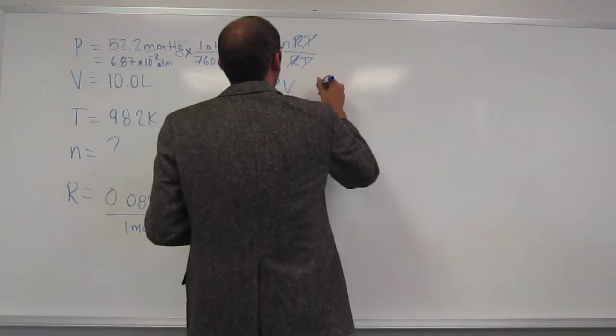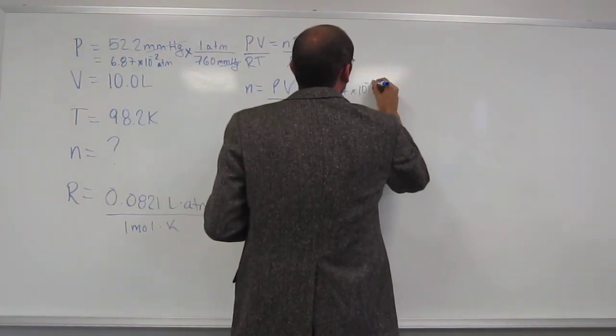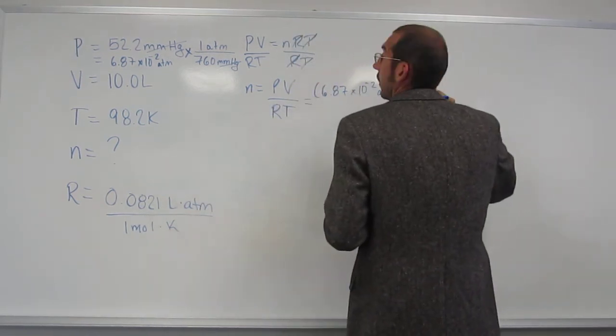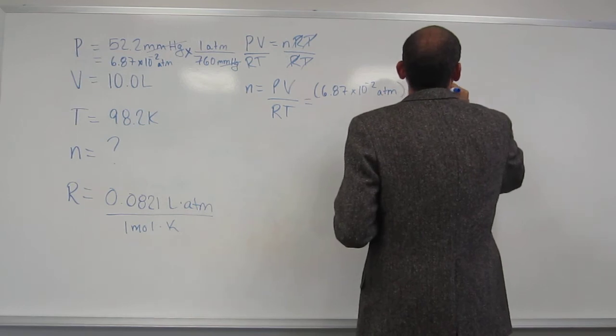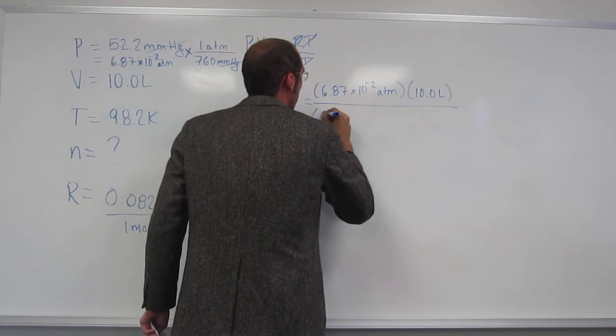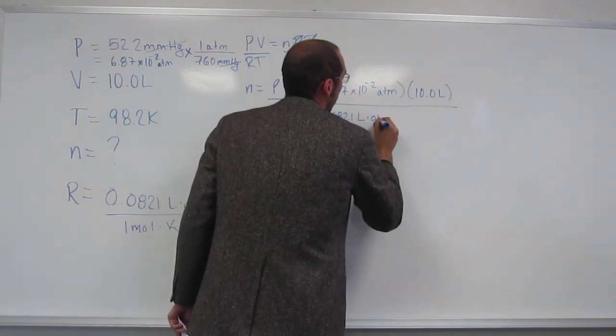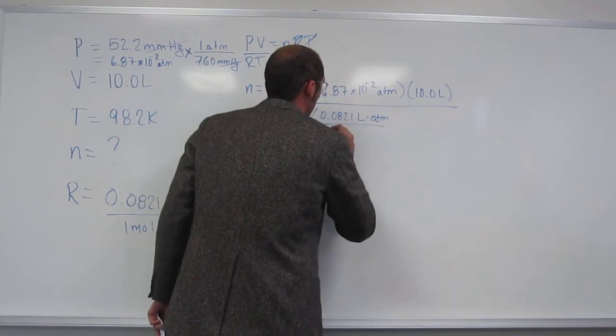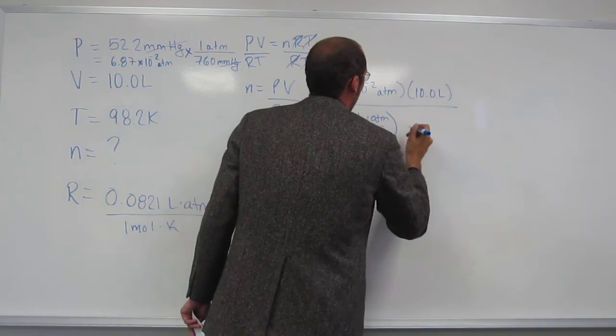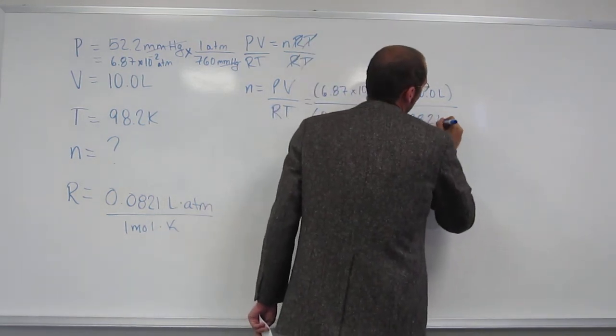So, P, we just got, 6.87 times 10 to the negative 2 ATM, 10.0 liters, divided by R, which is given to us. 0.0821 liter ATM per 1 mole kelvin, and then temperature, right?